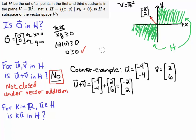So no, U plus V is not in H, so we say that this set is not closed under vector addition.